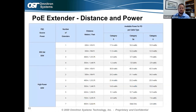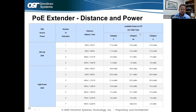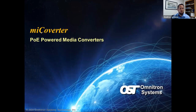The main consideration when using PoE extenders is distance and power — power is lost over distance. A chart available on the Omni Extender and RuggedNet PoE extender data sheets and on our website shows, based on your PoE power source, number of extender hops, and distance, how much PoE power is actually available at the end of the line when using Cat5, Cat5e, or Cat6 cabling. This chart ensures you'll have enough power at the end to power your device.